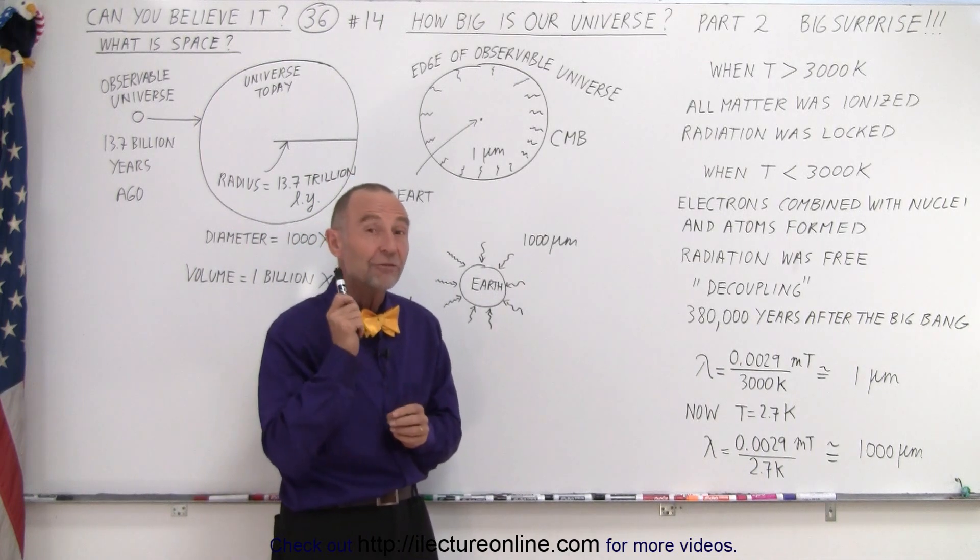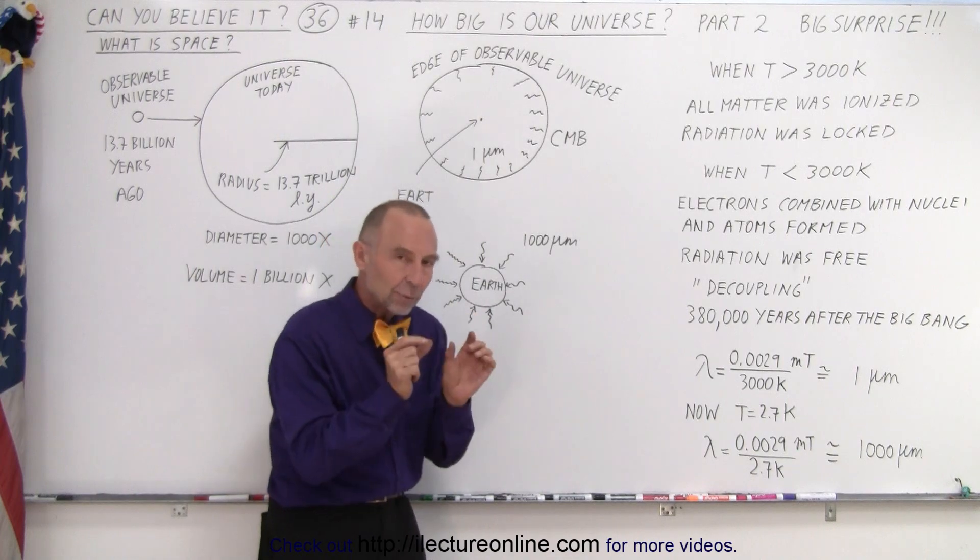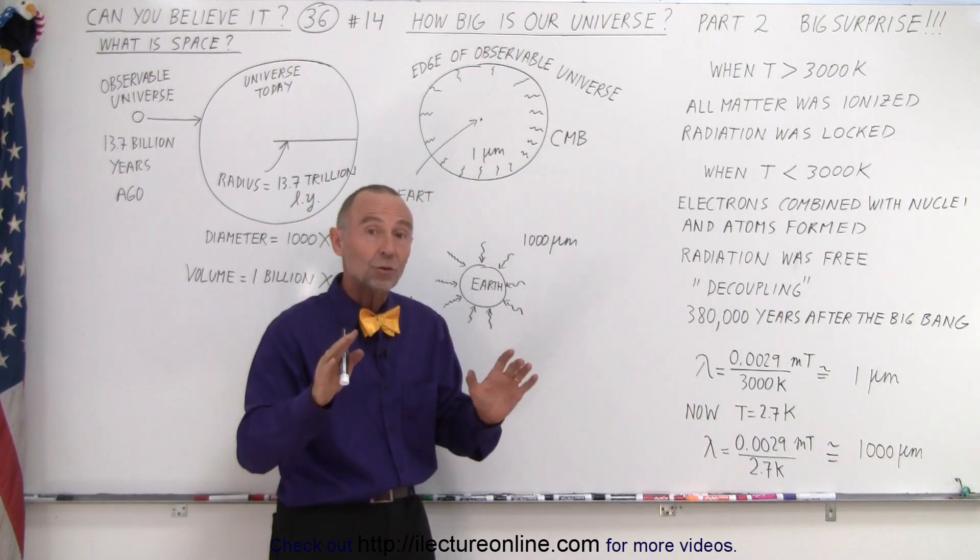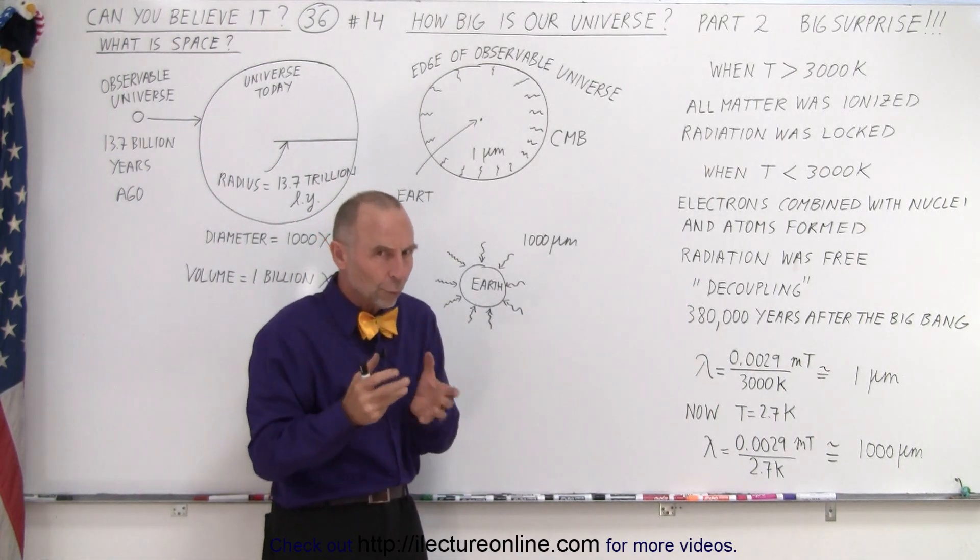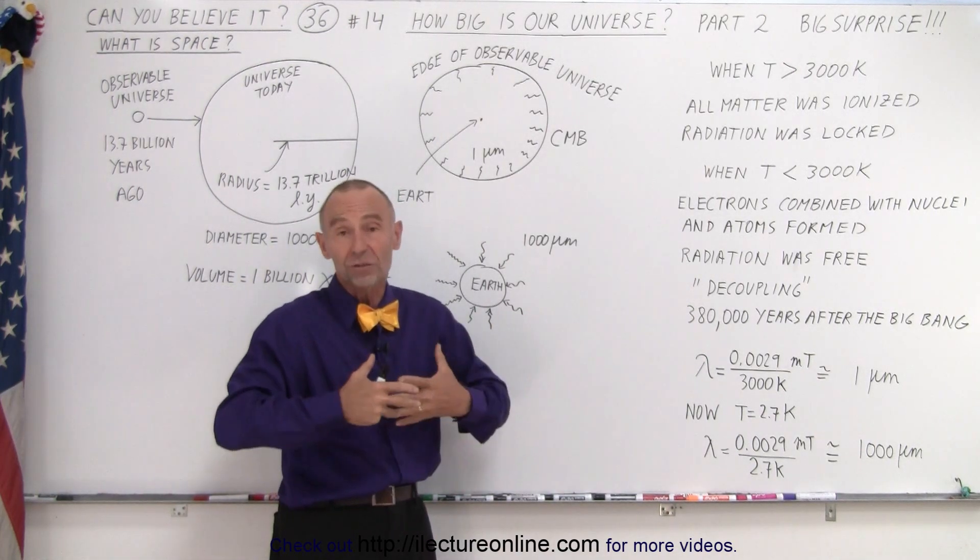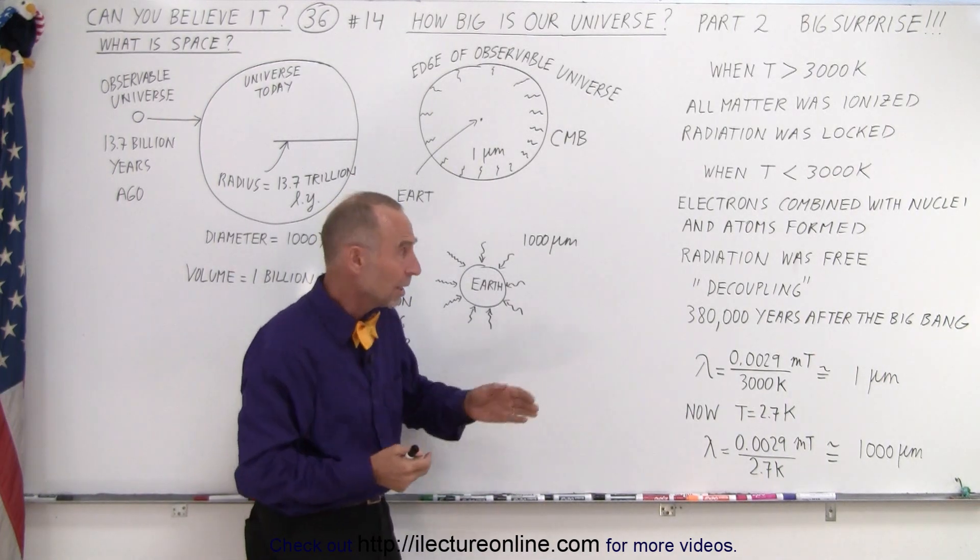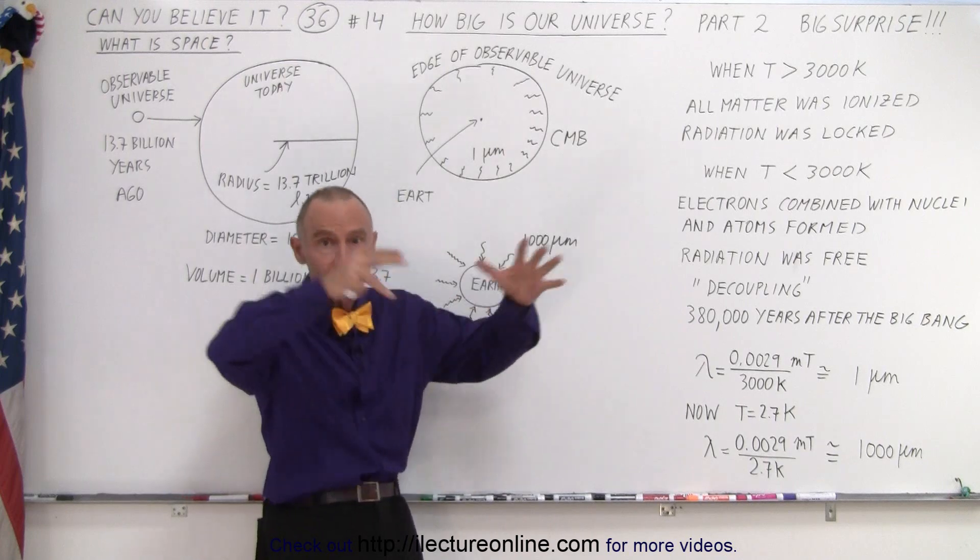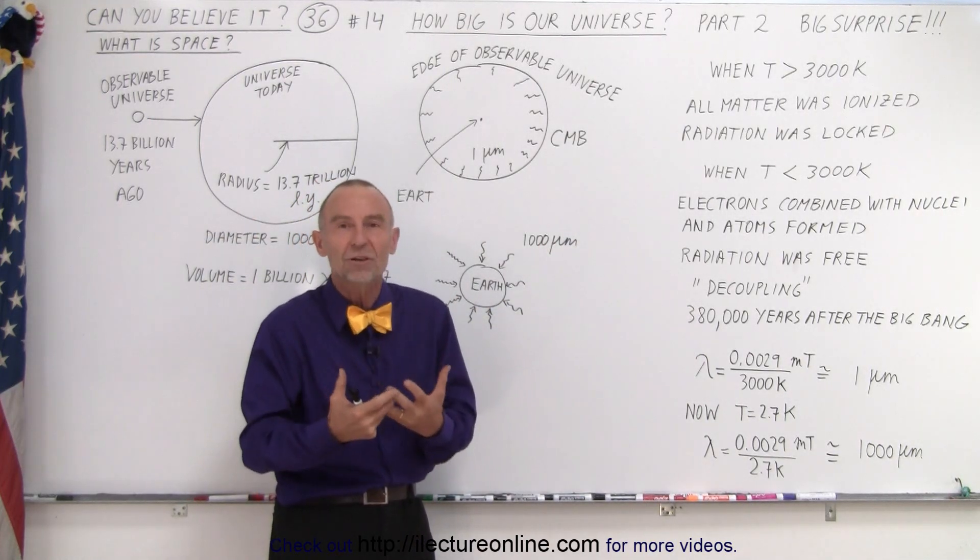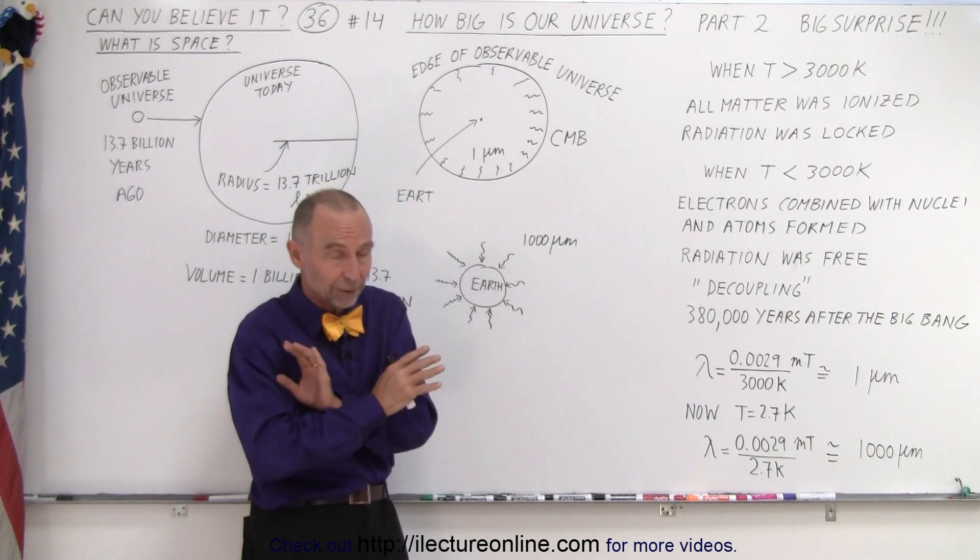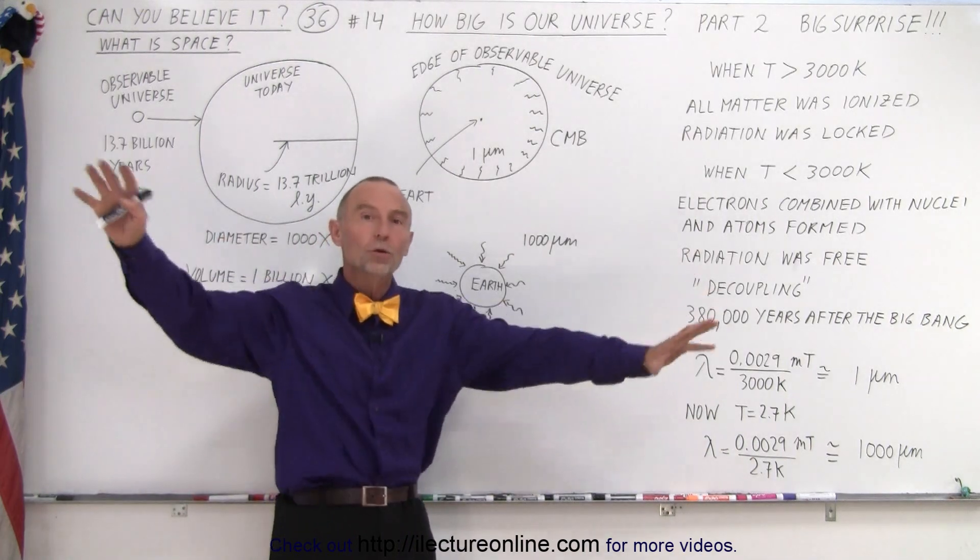But there was something very unique about that radiation. Absolutely astounding. The frequency and wavelength of that radiation was exactly the same for all the radiation in the universe. At that point there were no stars yet. So there was no starlight. There was no galaxies. It was pitch black, pitch dark because that radiation that was everywhere was in the infrared range. So there was no visible light radiation in the universe. It was simply pitch black and that radiation began to free flow in all directions.